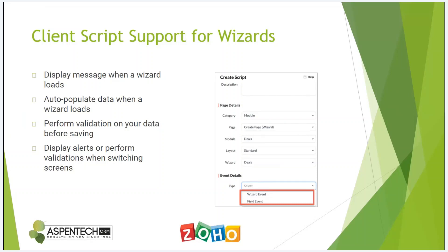This is a really powerful feature because now with client script used in conjunction with wizards, we can have things pop up on screen when you go to create or edit a record, have data automatically load in from other places in the system, validate data while still on the screen before you click save — so you can immediately know if an email address already exists in the system — and display alerts and perform validations when you're switching screens within the wizard.